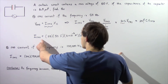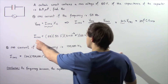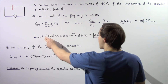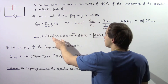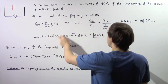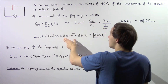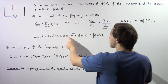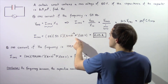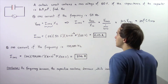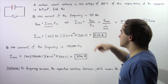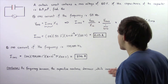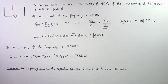So the root mean square current equals 2π multiplied by a frequency of 50 Hz, multiplied by a capacitance of 6×10⁻⁶ farads, multiplied by the voltage of 60 volts. That gives us approximately 0.113 amps.